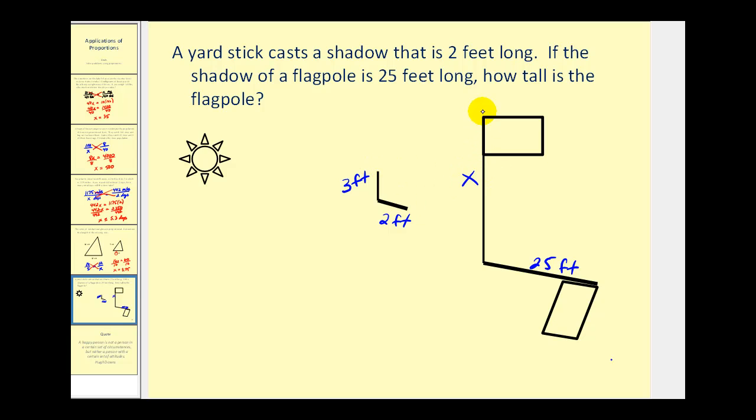So if we were to form a triangle here, these would be similar triangles. So we can set up a proportion to find the unknown. And we'll compare the heights of the poles to the lengths of the shadows to set up our proportion. So we would have 3 is to x as 2 is to 25.